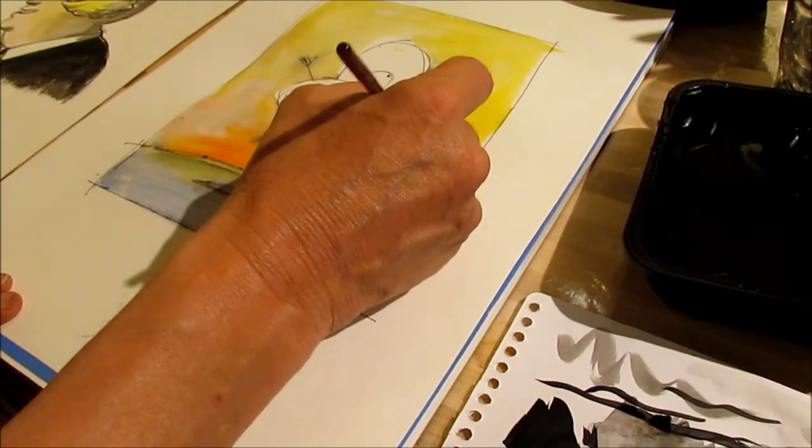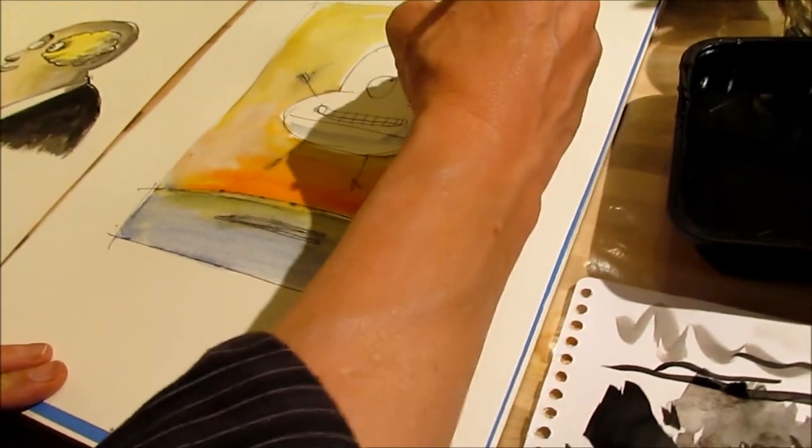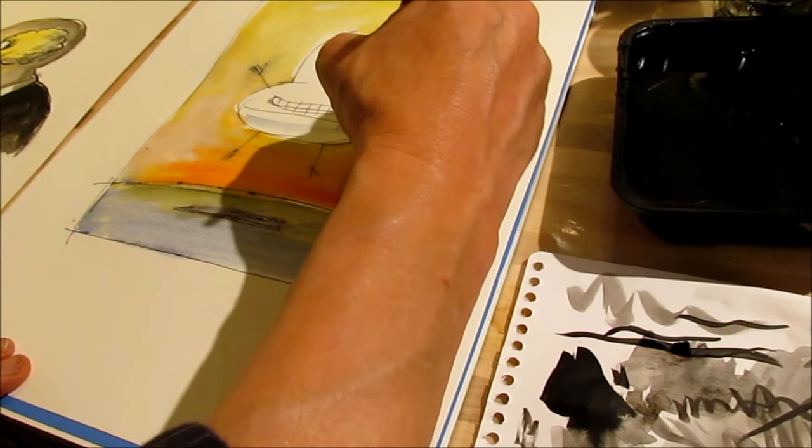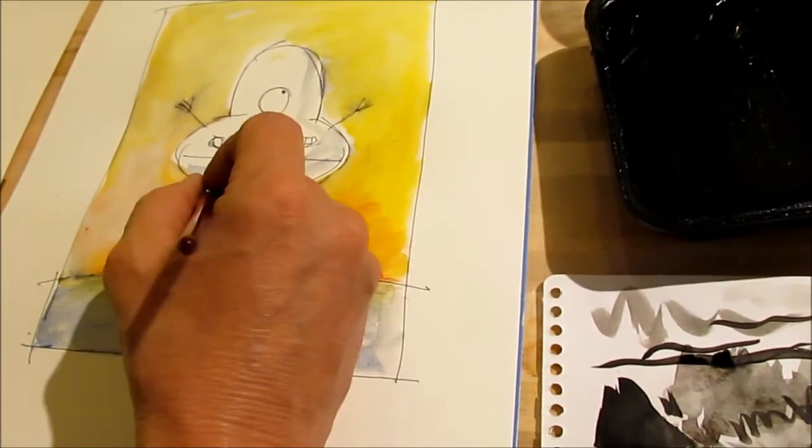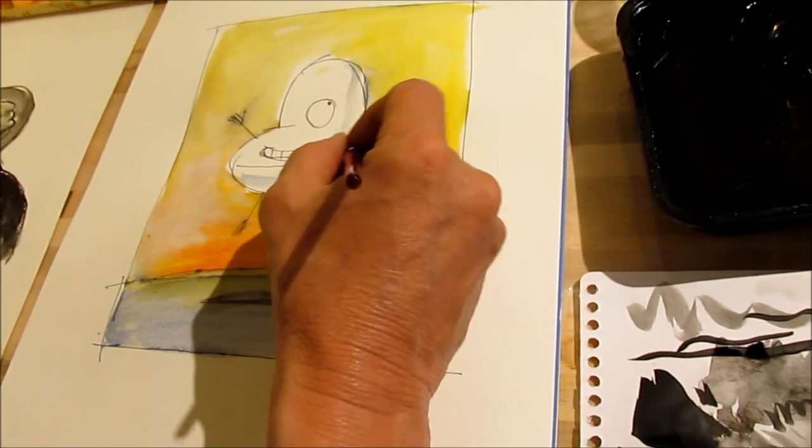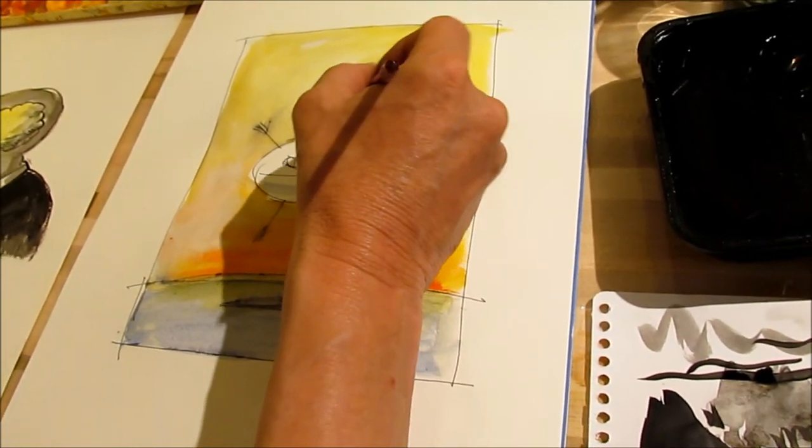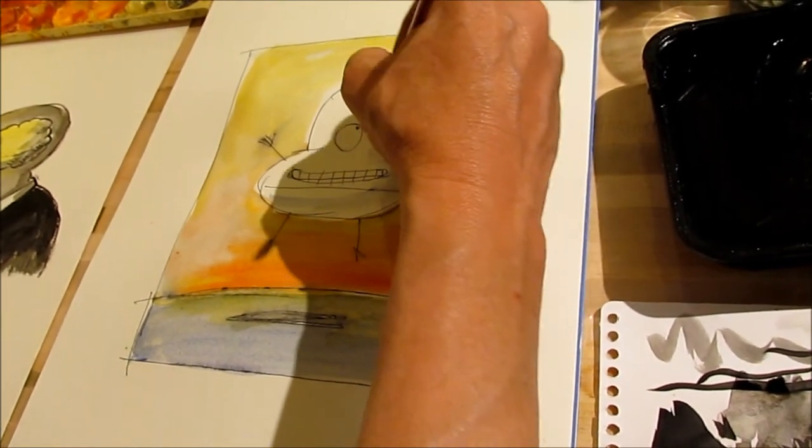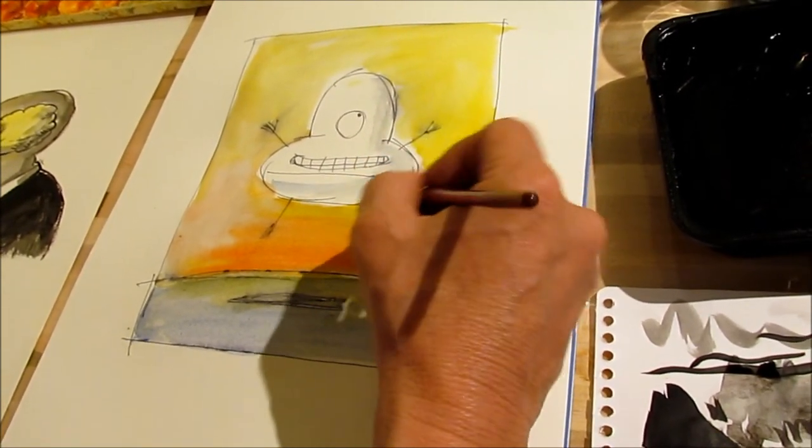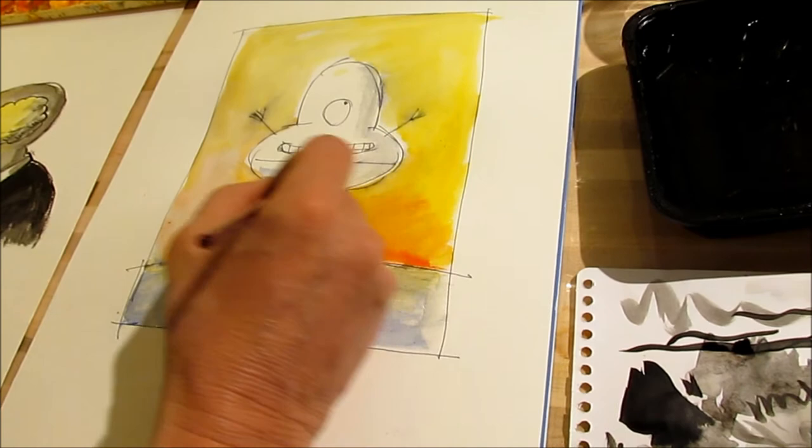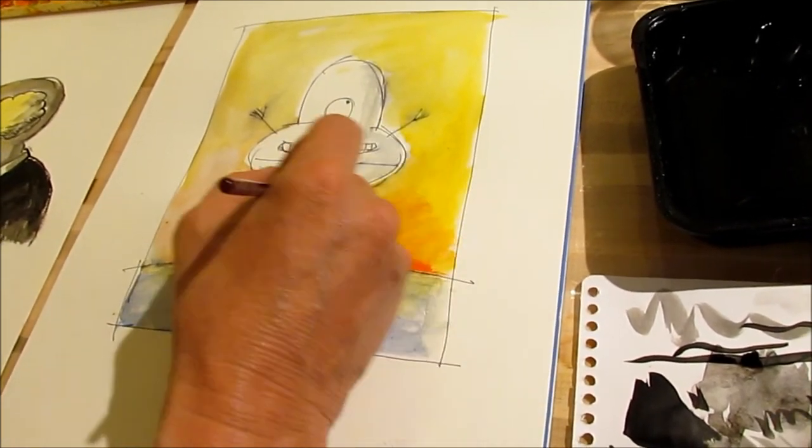See, here's Blubby. I can make him have a little volume by putting a little tonality on the side. And the light source is coming from the left. So it gives him volume, makes him more dimensional. It gives that illusion of dimension, even though it's just flat stuff on paper.